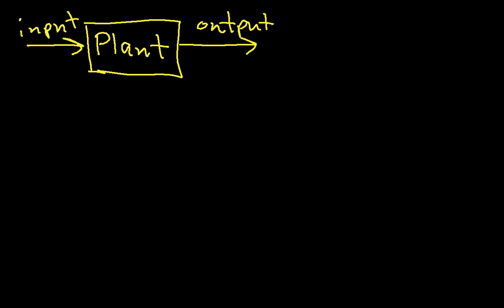For example, if you think about the idea of a steel mill where you take red-hot slabs of steel and run them through rollers, and the idea is to get the output slab of steel to be the right thickness. So there the input might be the force on the rollers, or maybe an electrical signal which then gets turned by hydraulic equipment into force. And the output might be the thickness of the steel that's running out of the plant.